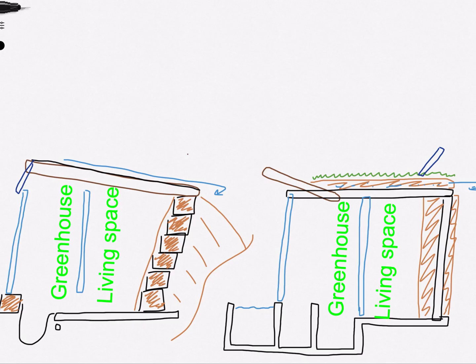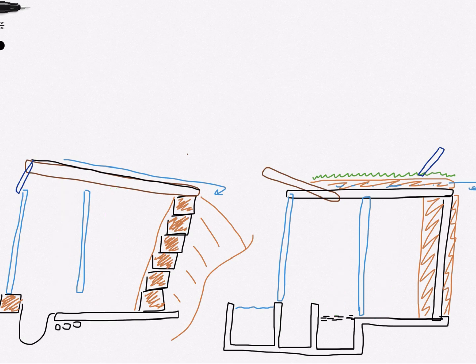Otherwise it's fairly similar. We have two sections, a greenhouse and a living area which are defined by two walls with varying numbers of windows. Another difference is the accessibility of the pipes.